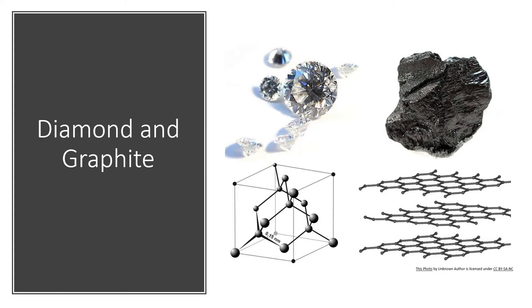So diamond and graphite have the exact same composition, but very, very different properties. And the difference in properties is due to the bonding in the two elements.